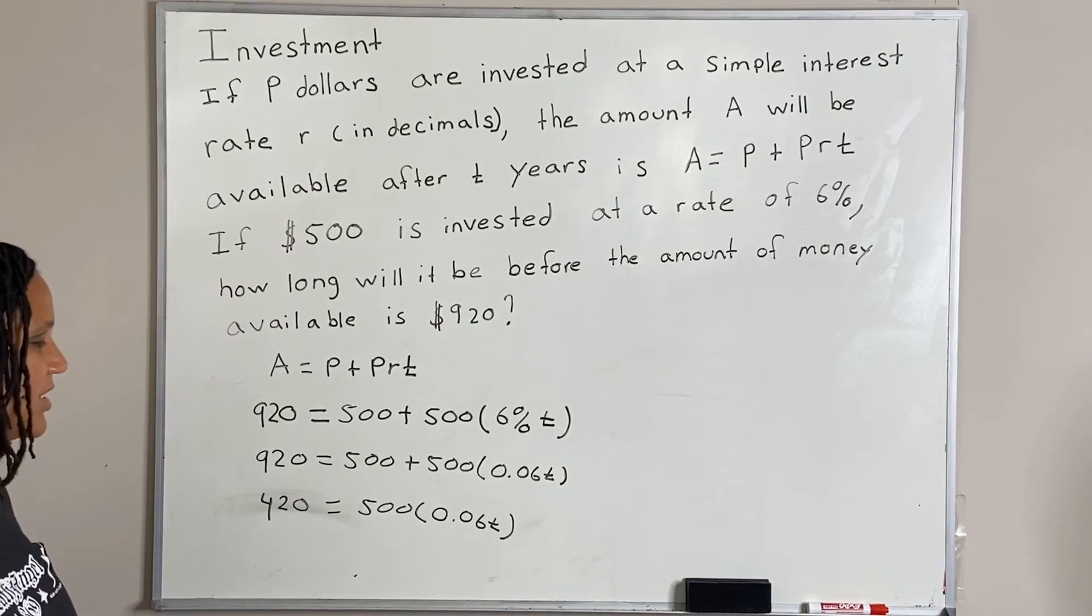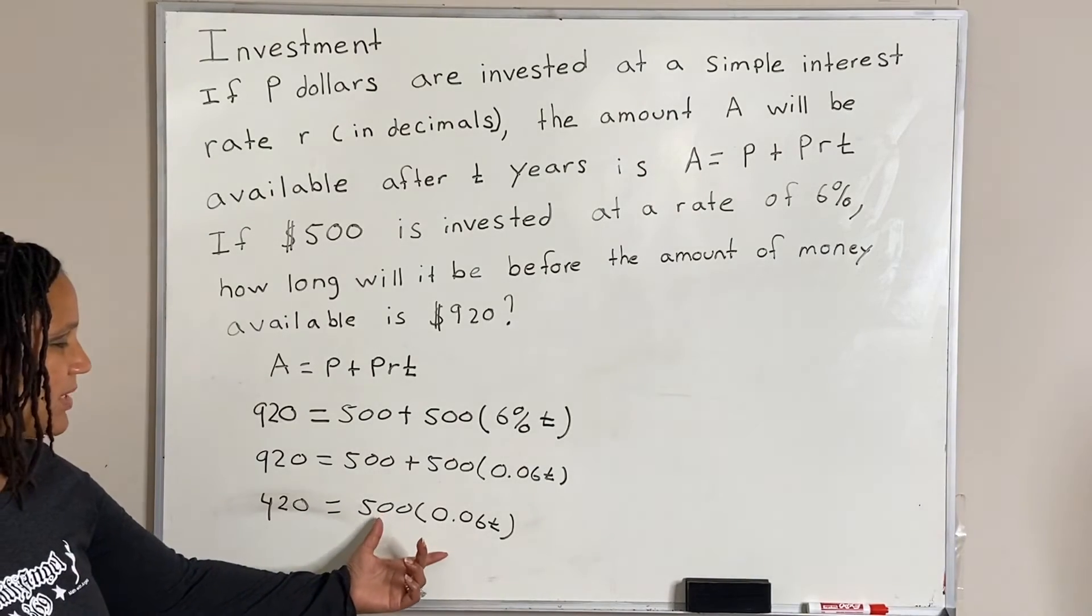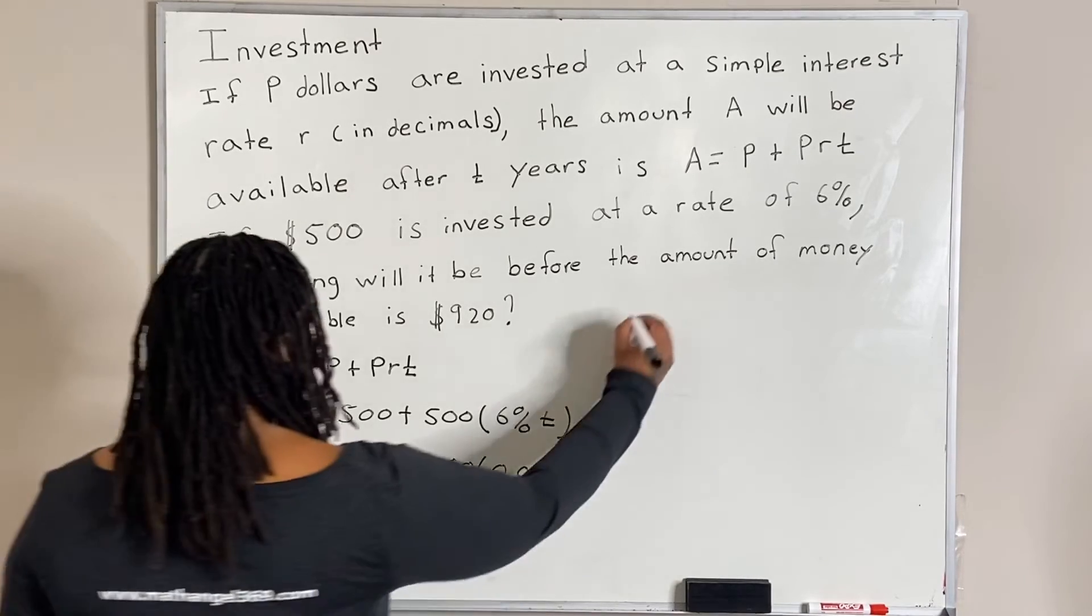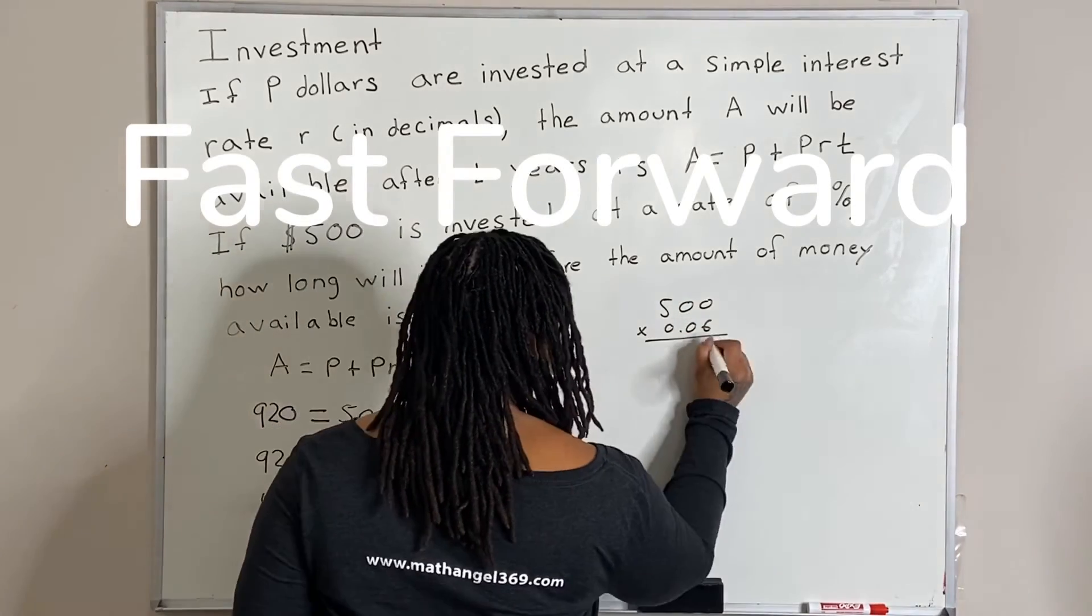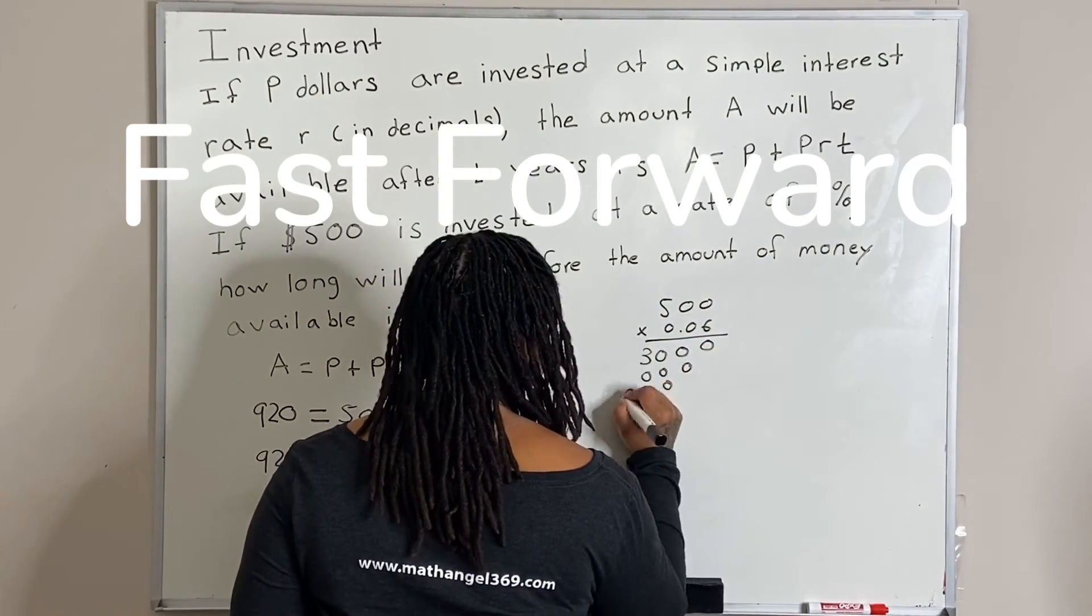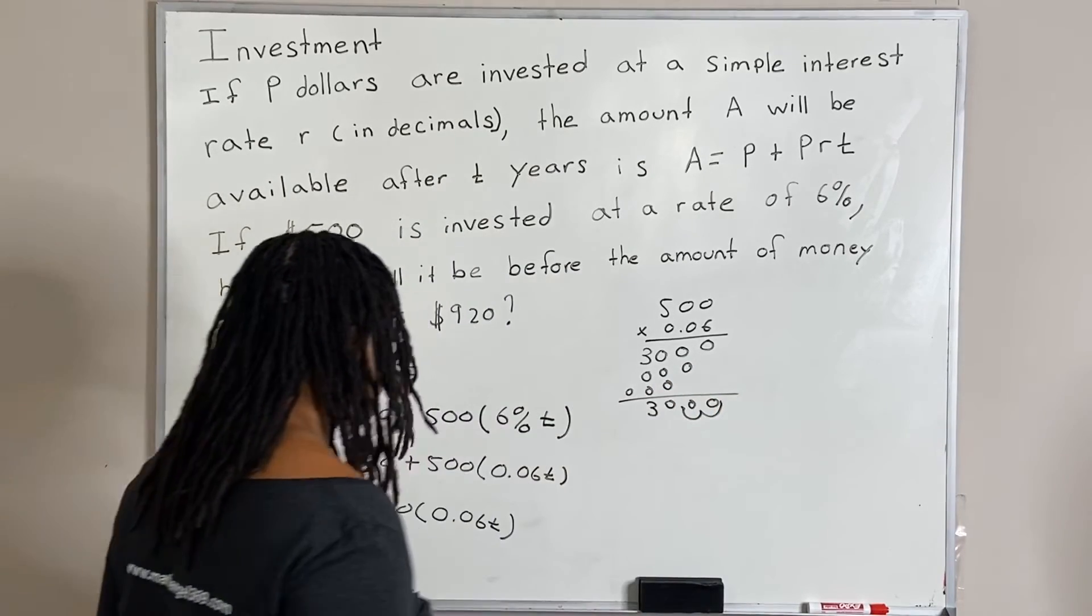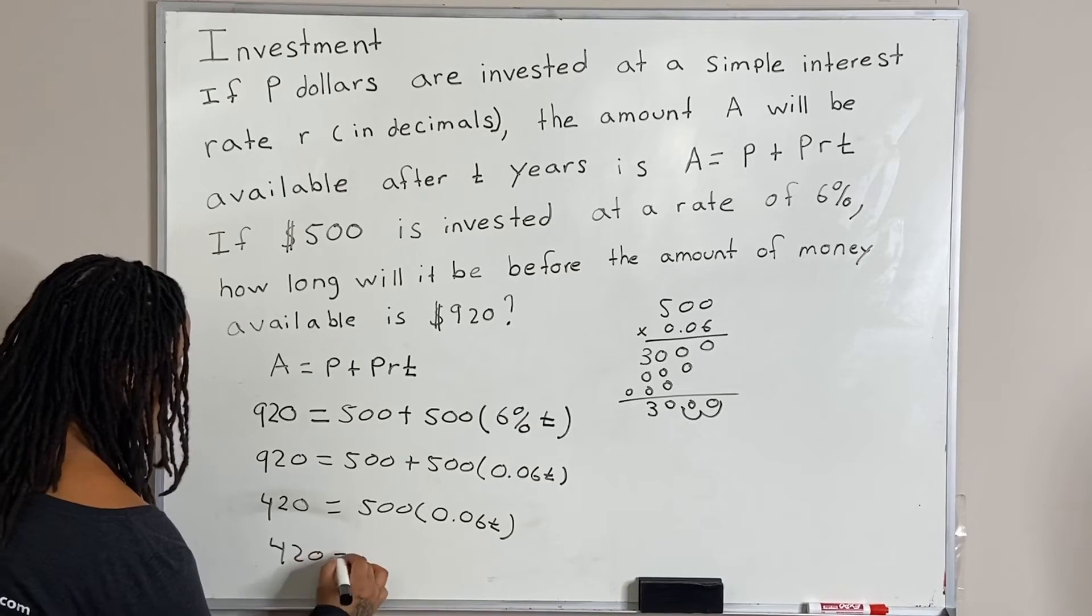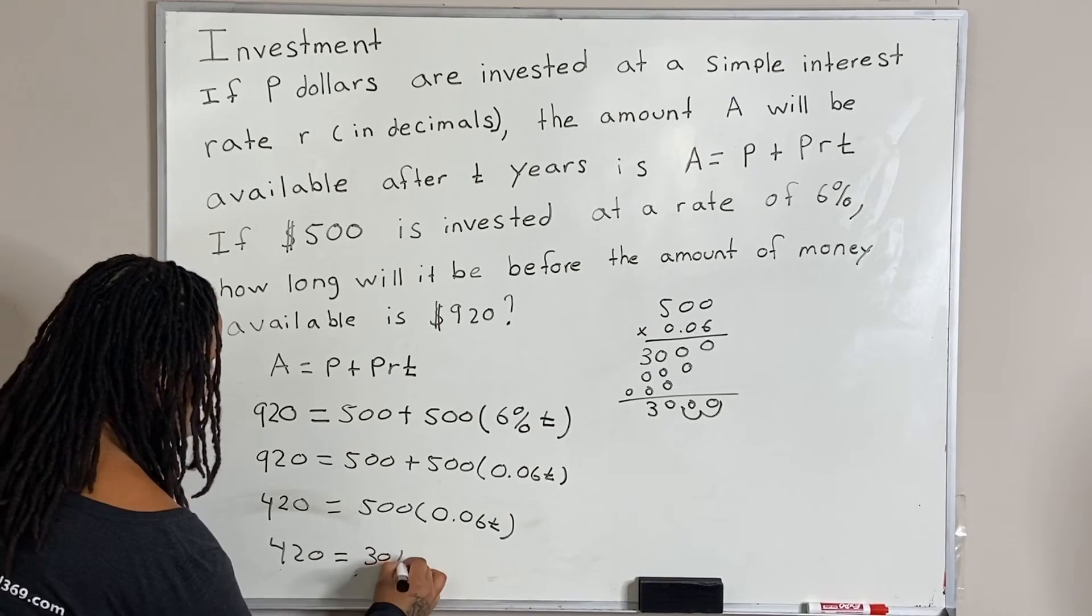And we're left with 500 times 0.06T. Now I'm just going to go ahead and multiply 500 times 0.06T, and we get 30. So we have 420 is equal to 30T.